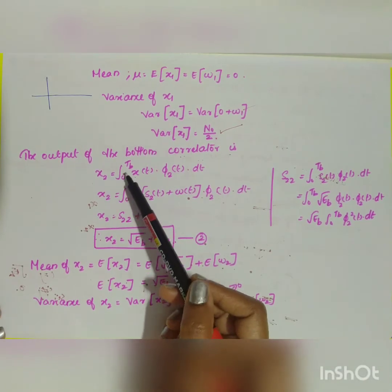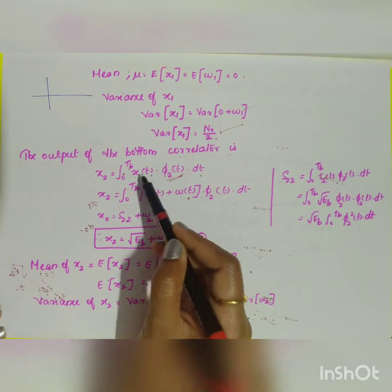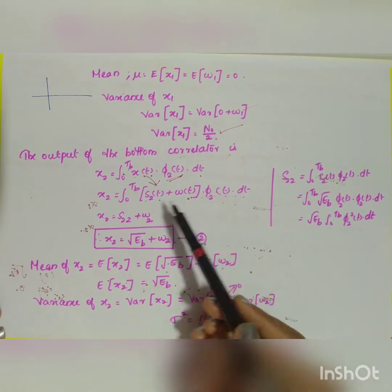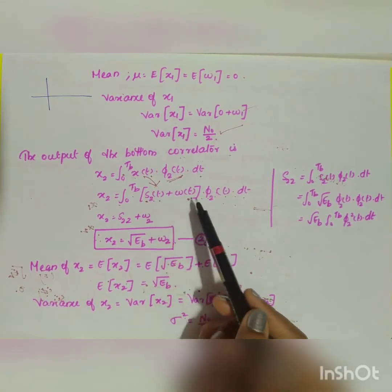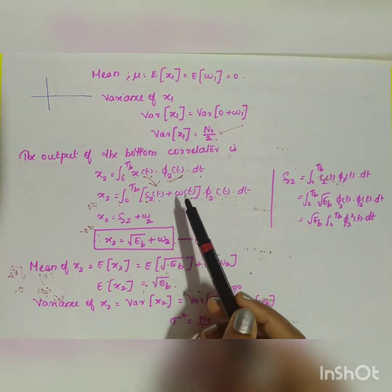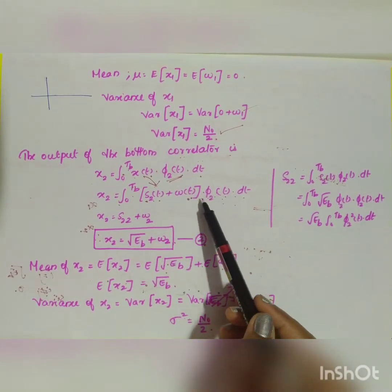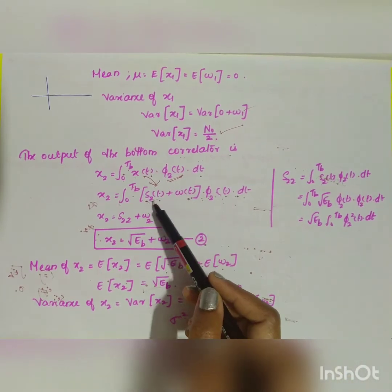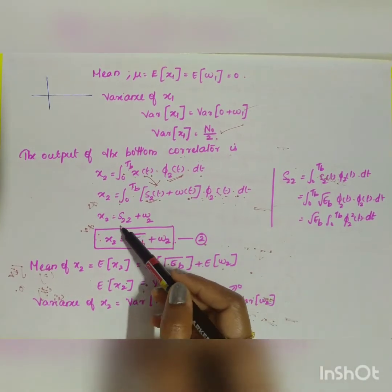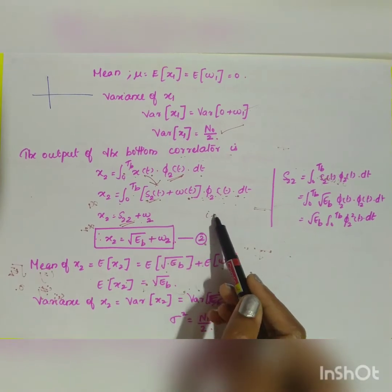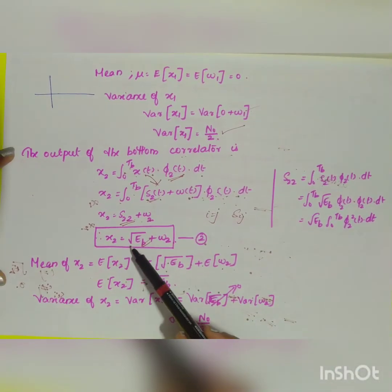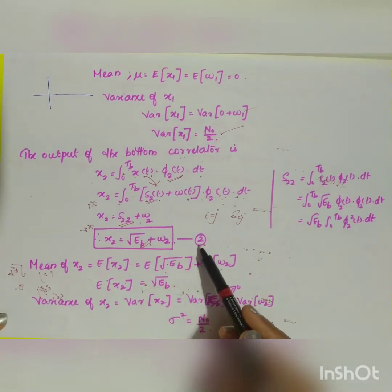The bottom correlator output is: x2 = ∫₀^Tb x(t)·φ2(t) dt. Substituting s2(t) + w(t), this becomes ∫₀^Tb s2(t)·φ2(t) dt + ∫₀^Tb w(t)·φ2(t) dt = s22 + w2. Since i = j, s22 = √Eb, so x2 = √Eb + w2. This is equation 2.